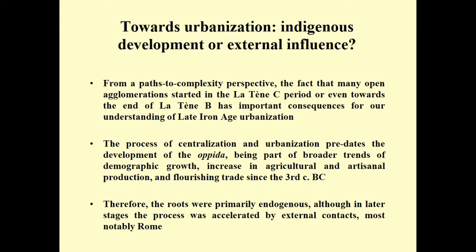So how should we interpret this, and how does the role of open agglomerations make us rethink the urbanization process in the late Iron Age? The Opida start mostly around the very end of the second and beginning of the first century BC. This has often been linked, particularly in regions such as Central Gaul or Southern Germany, with the growing expansion of Rome and the conquest of Southern France — the Narbonensis — which would have triggered the appearance of the Opida. I'm not neglecting that this increasing pressure from Rome played a role, but the open agglomerations make clear that the process of centralization or urbanization was earlier — going back to the third century BC.